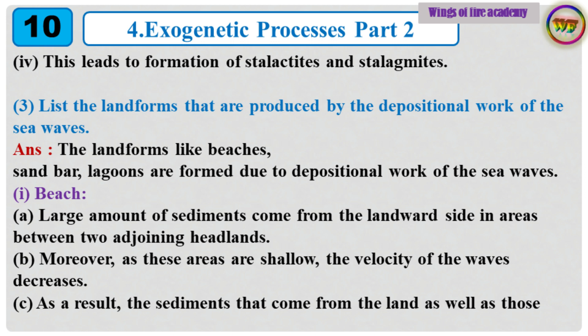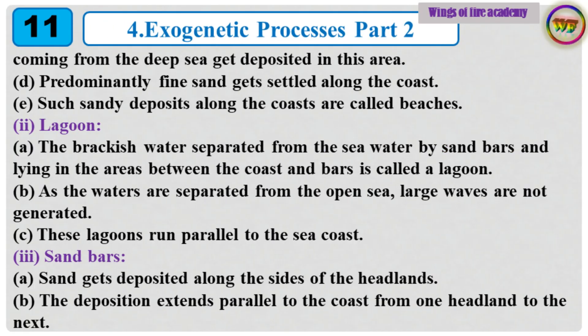5. List the landforms that are produced by the depositional work of the sea waves. Answer: The landforms like beaches, sandbars and lagoons are formed due to depositional work of the sea waves. 1. Beach: Large amounts of sediments come from the landward side in areas between two adjoining headlands. As these areas are shallow, the velocity of the waves decreases. The sediments from the land as well as those from the deep sea get deposited in this area. Predominantly fine sand gets settled along the coast. Such sandy deposits along the coasts are called beaches.